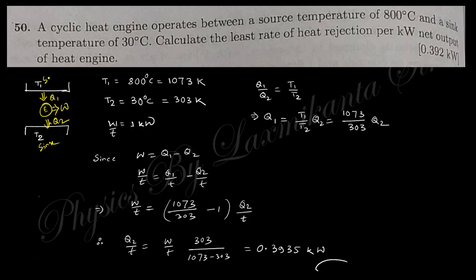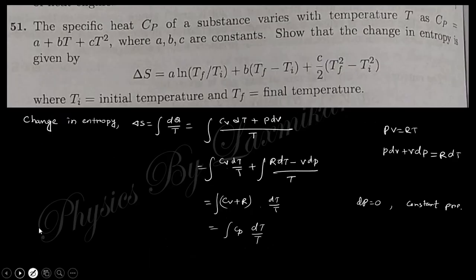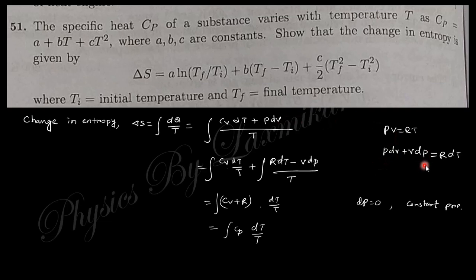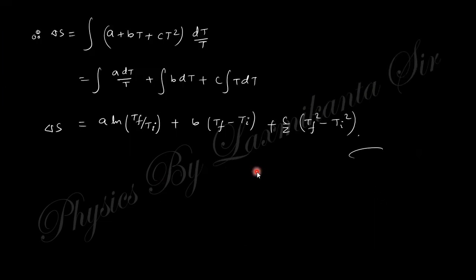Next question: the specific heat Cp varies with temperature as Cp = a + bT + cT², where a, b, c are constants. Find the change in entropy. Using ΔS = ∫dQ/T = ∫Cp dT/T at constant pressure (P dV = 0), and substituting the expression for Cp, then integrating, gives the entropy change expression directly.